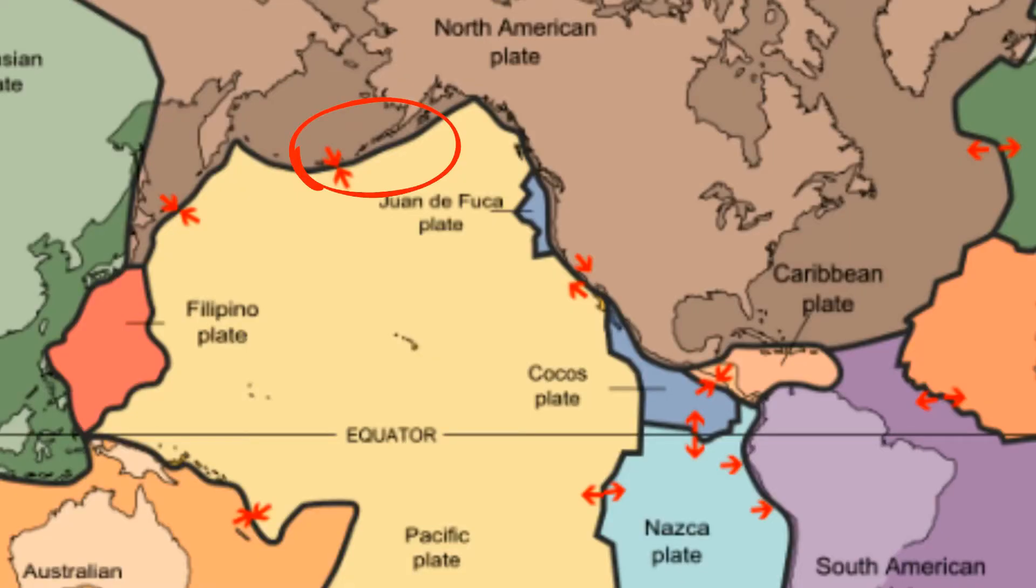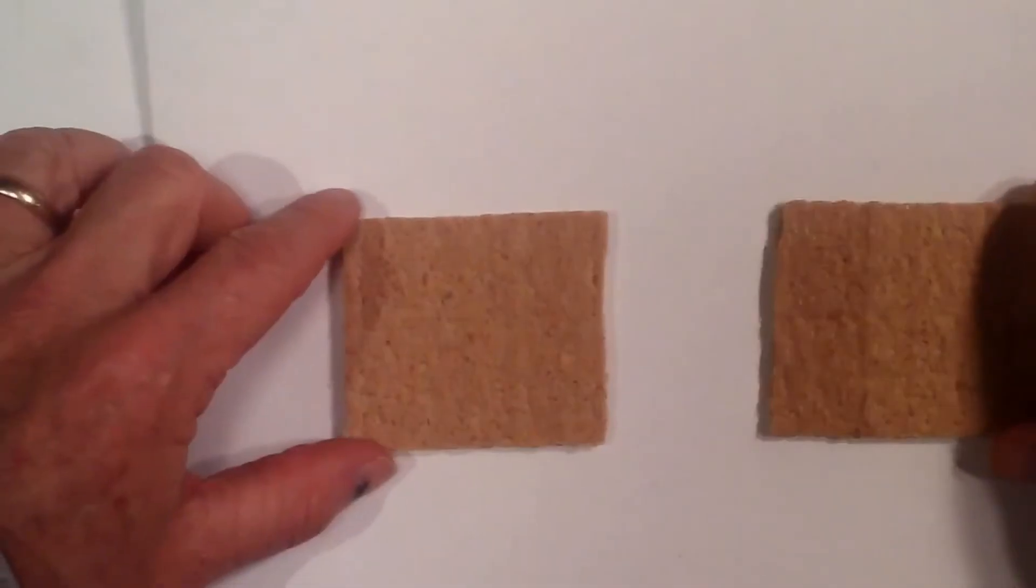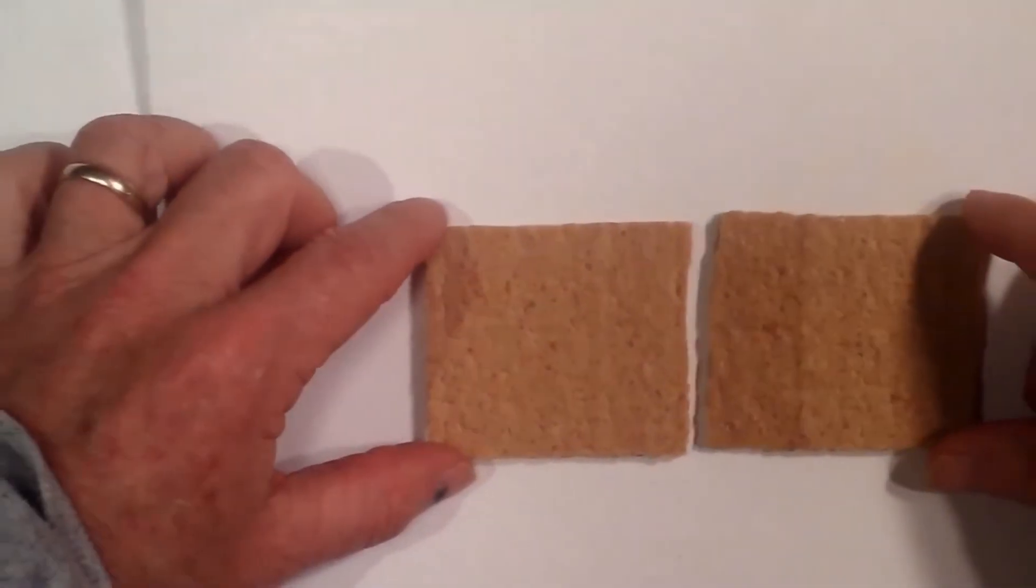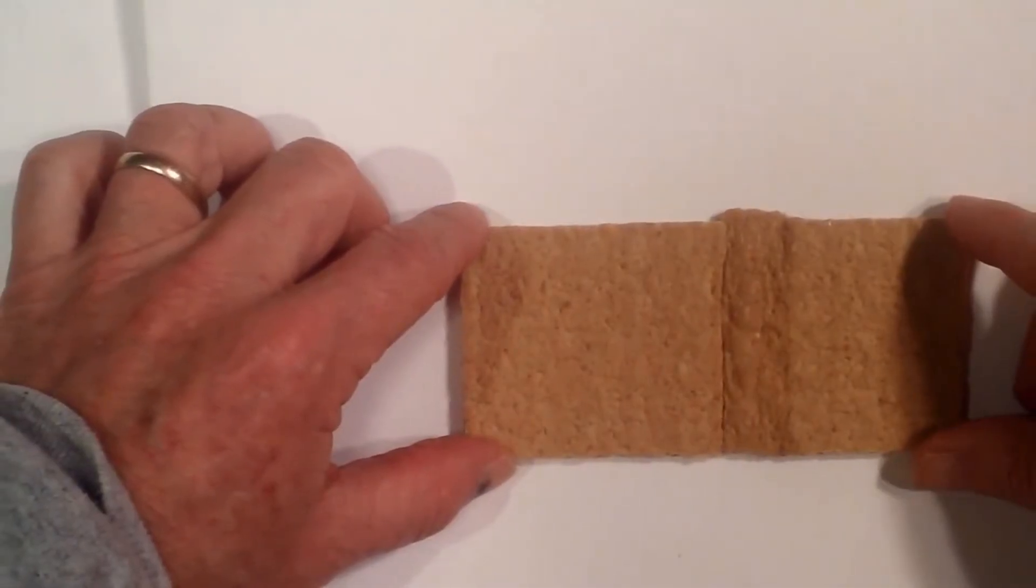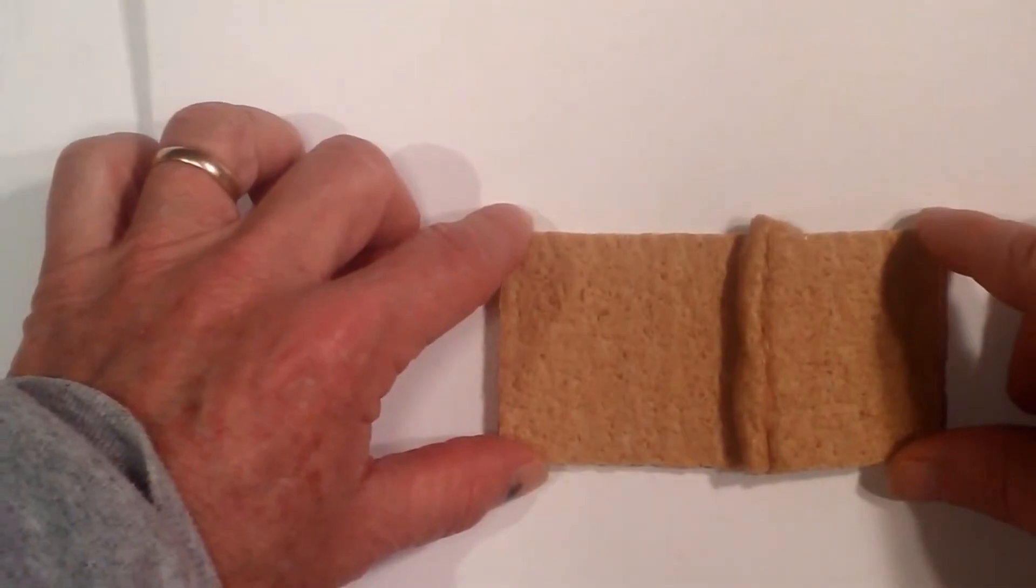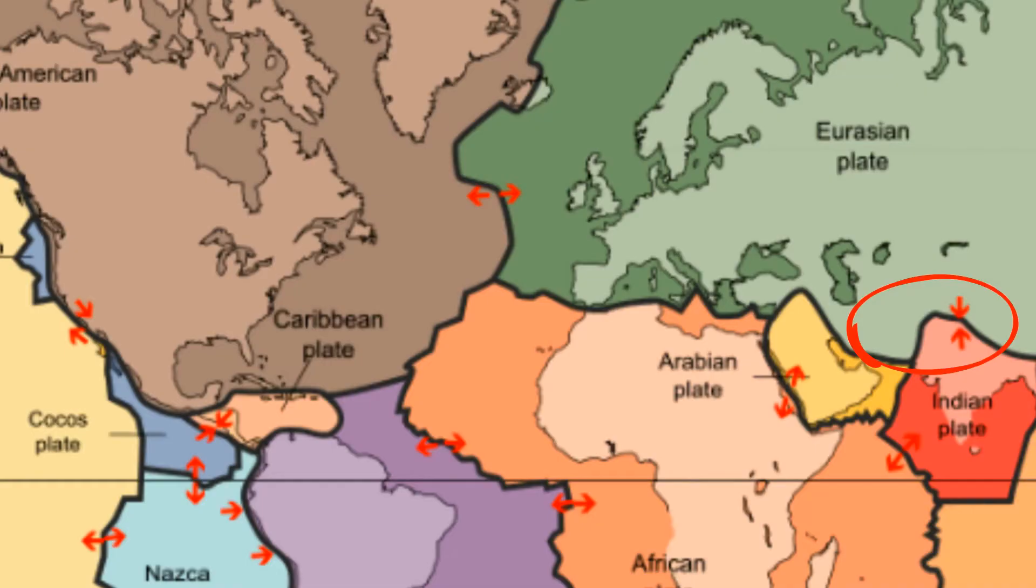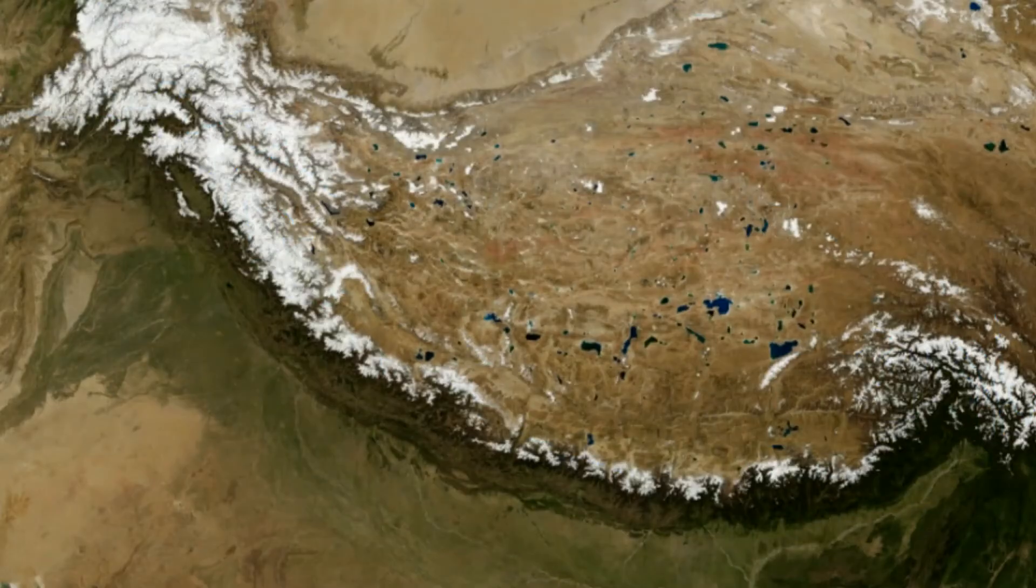When continental strikes continental lithosphere, neither crust subducts nor is magma formed. Earthquakes occur. These two Graham crackers illustrate what happens. The two plates buckle and create folded mountains. An example is the Indian plate colliding with the Eurasian plate and creating the Himalayan mountain range. I hope that helps with different types of convergent boundaries.